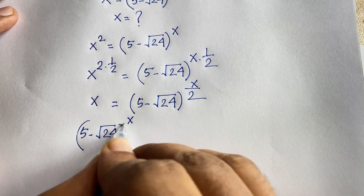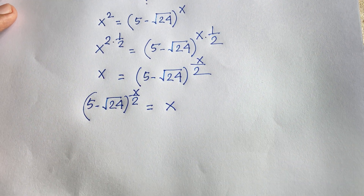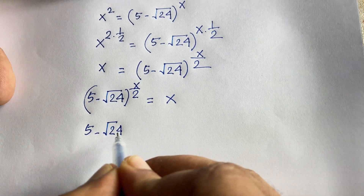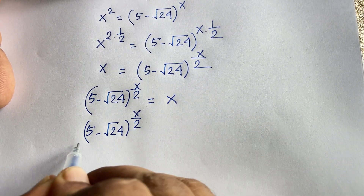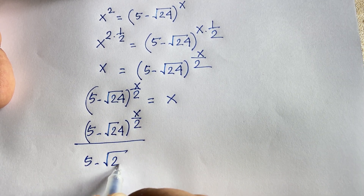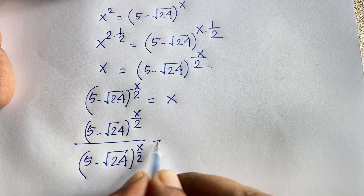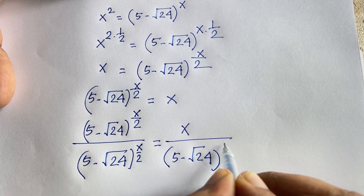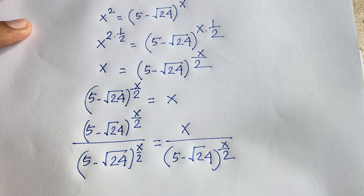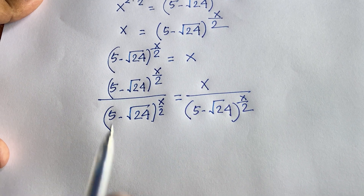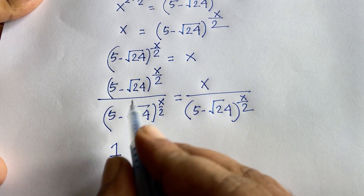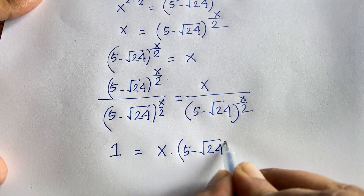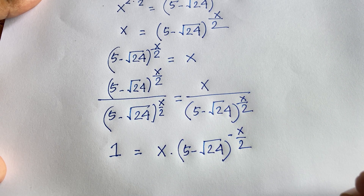So (5 minus square root 24) to the power x over 2 equals x. Now I divide both sides by (5 minus square root 24) to the power x over 2. This gives 1 on the left side, since those terms cancel, and we find 1 equals x times (5 minus square root 24) to the power minus x over 2.